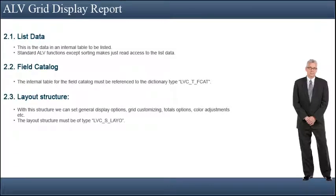List data is the data in an internal table to be listed. Standard ALV functions except sorting make just read access to the list data. For the field catalog, we use another internal table to define specifications on how the fields of our list will be displayed. This internal table is called the Field Catalog.